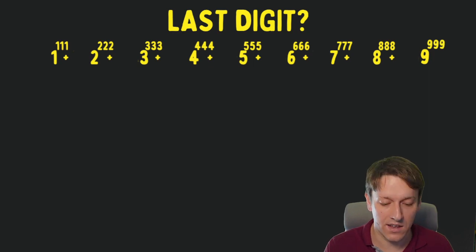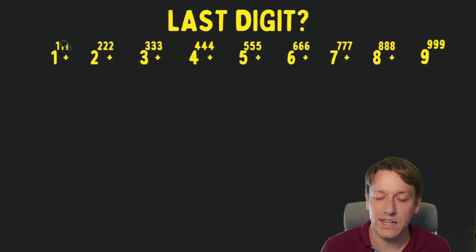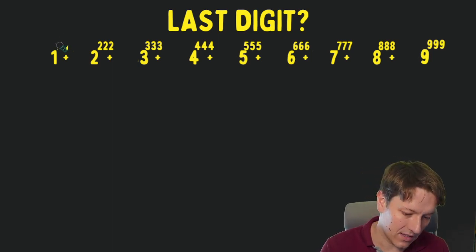Let's look at each of these in turn. 1 to the 111 we know is 1, so its last digit must be 1, and that would also be the last digit of 111 to the 111, because 1 to any power is equal to 1. So I can actually remove the power here and say that this one is just 1.